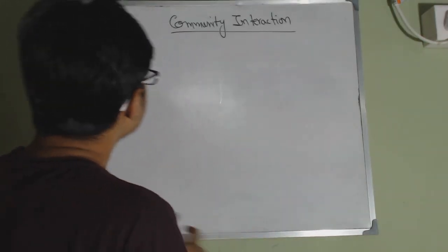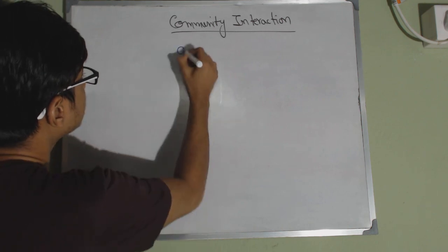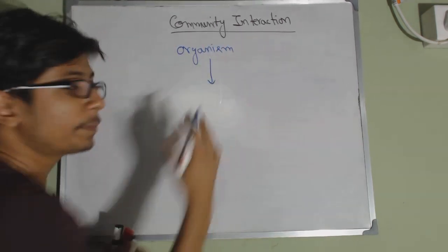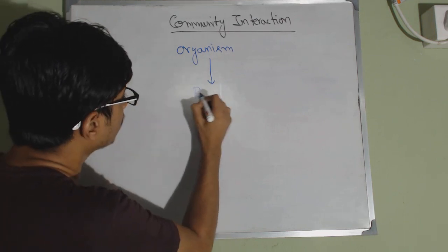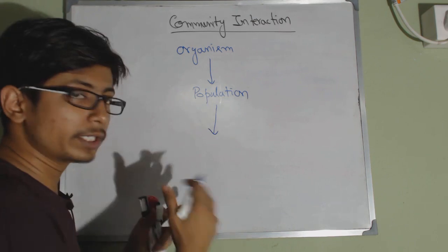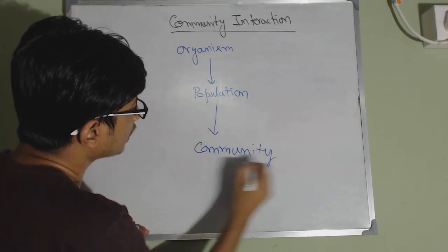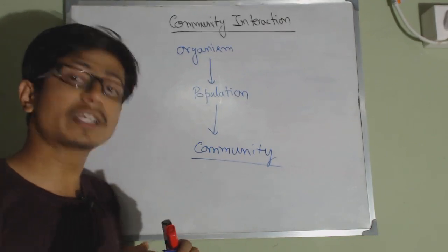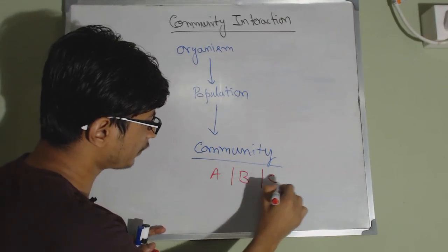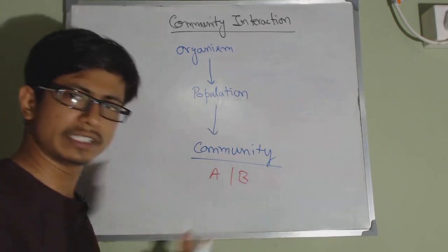Talking about the hierarchy: we start with organisms; multiple organisms together form a population; many populations together form a community. If we take different communities — community A, community B, community C — let us take two communities for easier understanding.